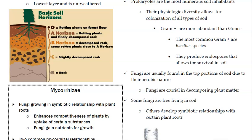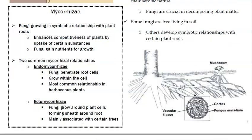Fungi are usually found in the top portions of soil due to their aerobic nature and are crucial in decomposing plant matter. Some fungi are free-living in soil; others develop symbiotic relationships with plant roots called mycorrhizae. There are two common types: endomycorrhizae, where the fungus penetrates and grows within root cells — the most common relationship in plants — and ectomycorrhizae, where the fungus grows outside the plant cells forming a sheath around the root, mainly associated with certain types of trees.